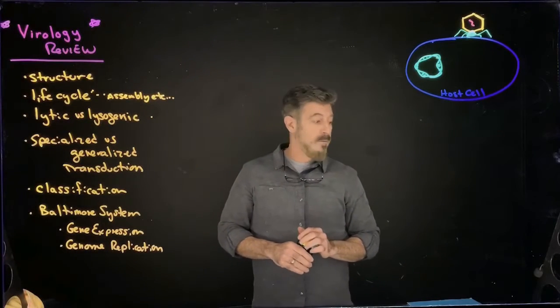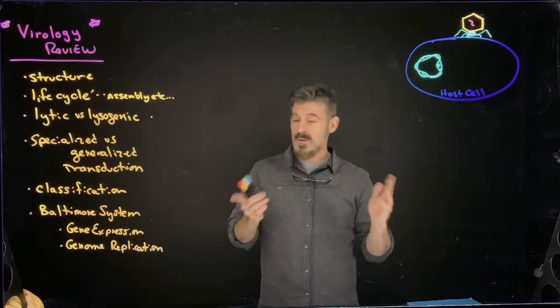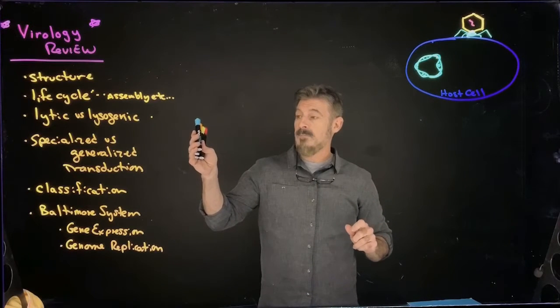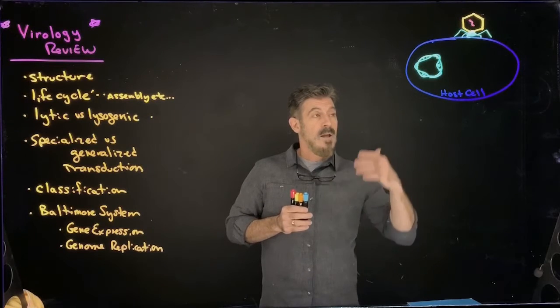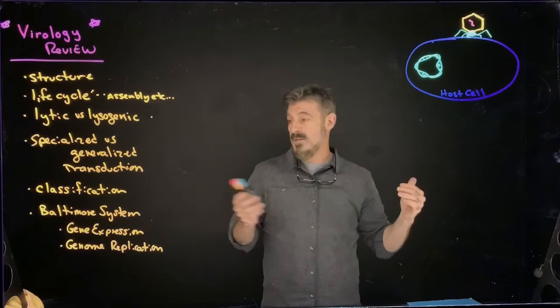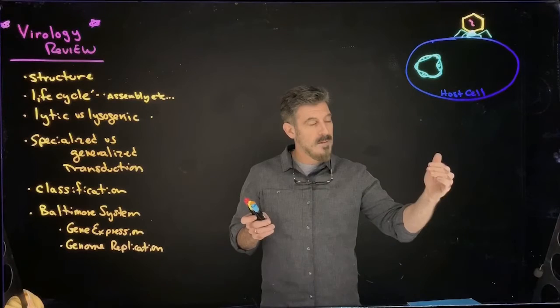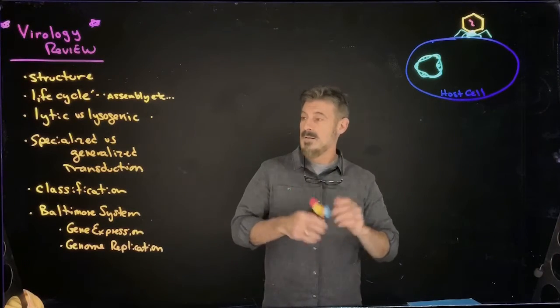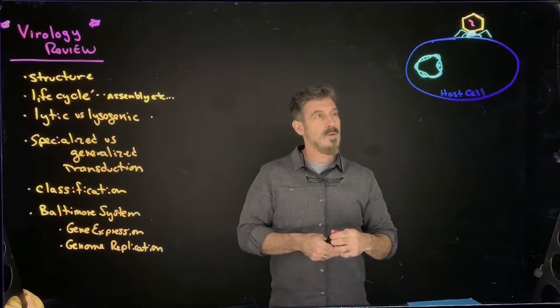Alright, we're going to do a quick review of the virology material we covered, which is mostly just an introduction to things like structure, life cycle, and then the classification of virus and how different types of genomes that the virus have is one way of classifying it. Then I want you to be able to explain how the genomes can be replicated and their genes are expressed depending on what type of genome they have. So that's the whole thing quickly. I'm going to go over some of the basics of it as a quick review.